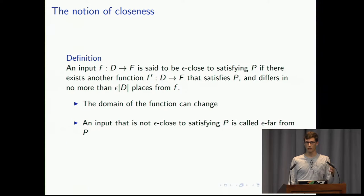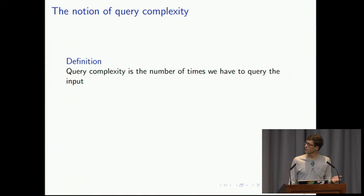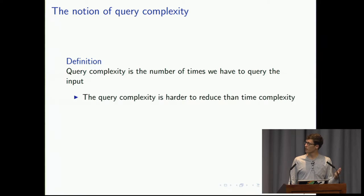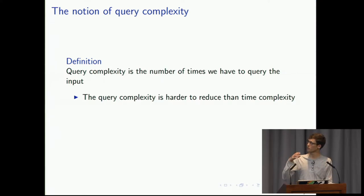Remember that we're trying to build sublinear time property testers, which means we need to only look at a fraction of the input. We want to minimize this fraction — essentially the number of times we query the input — and we can capture this notion using query complexity. Query complexity is a hard lower bound on time complexity, because every query takes O(1) time. So we can't run any faster than our query complexity, which also means it's harder to reduce than time complexity, so people focus on query complexity for property testers.